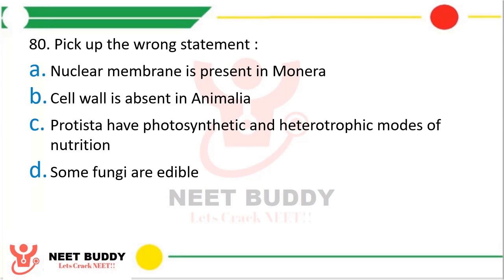Question number 80: Pick up the wrong statement. Option A: Nuclear membrane is present in Monera. Option B: Cell wall is absent in Animalia. Option C: Protista have photosynthetic and heterotrophic mode of nutrition. Option D: Some fungi are edible. The correct answer — Option A is wrong; nuclear membrane is absent in Monera, not present.